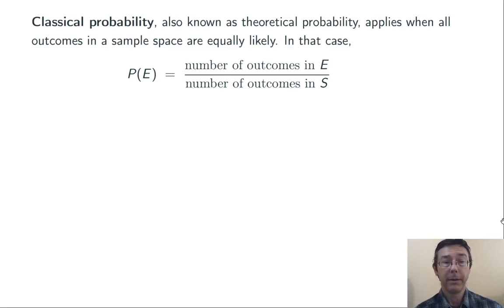A different way of computing probability is classical probability, also known as theoretical probability. And this only applies when all of the outcomes in the sample space are equally likely. And in that case, we count the number of outcomes in the event, count the number of outcomes in the sample space, and divide to get the probability. To say this a little more technically, we're doing the cardinality of the set E divided by the cardinality of the set S. So cardinality just means the number of elements in that set. Here's the notation, sort of absolute value of E divided by absolute value of S. And that just means number of outcomes in each.